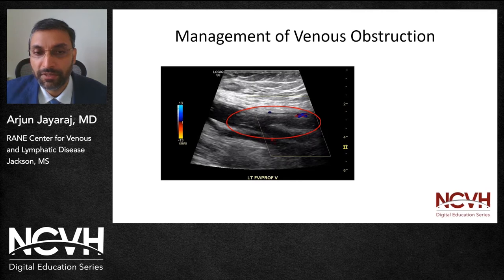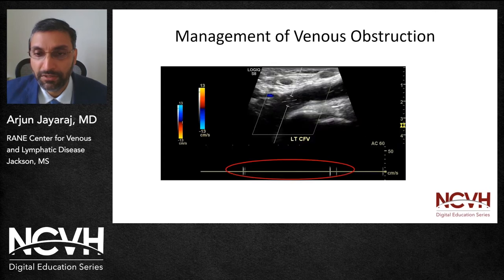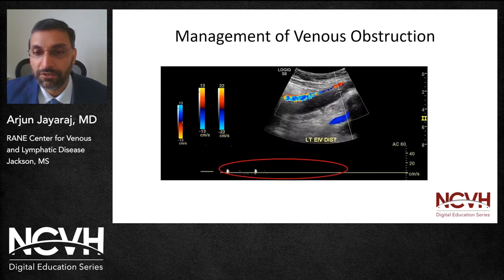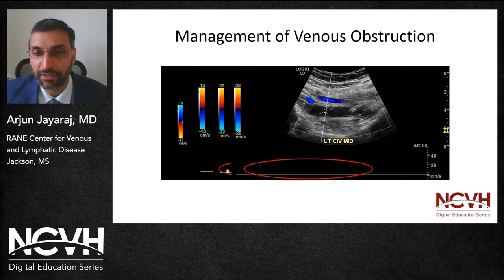This particular duplex image captures the thrombus burden within the femoral and the profunda veins. There was no flow in the common femoral, external iliac, or common iliac veins. Given her disabling symptoms, she was taken to the cath lab for pursuance of pharmacomechanical thrombectomy.